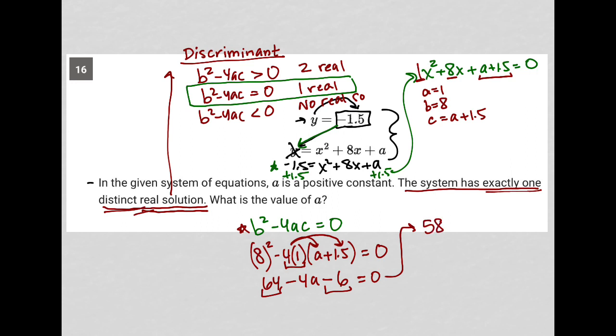So this becomes 58 minus 4a is equal to zero. I can then subtract 58 from both sides. I'm left with negative 4a is equal to negative 58.